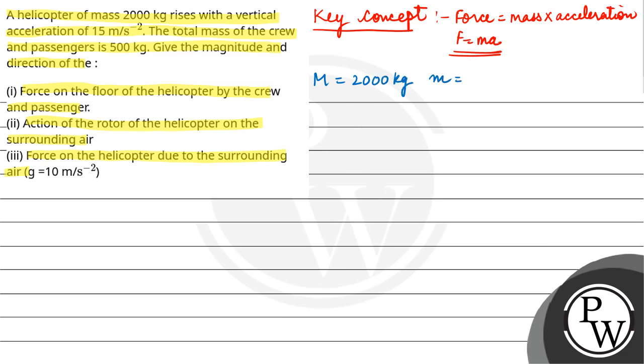Crew and passengers' mass is 500 kg. Vertical acceleration given is 15 meter per second square. So first of all you have to find the force on the floor of the helicopter by crew and passenger.